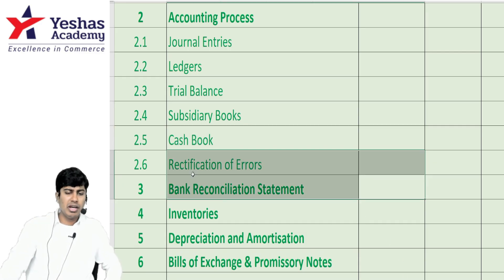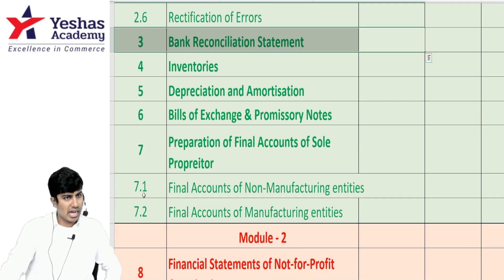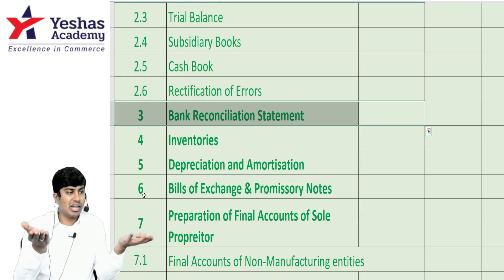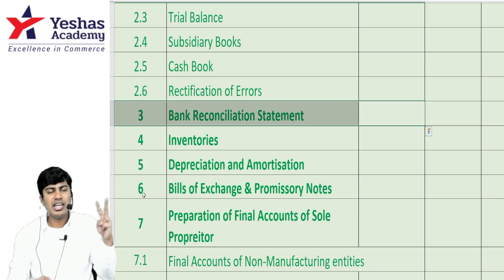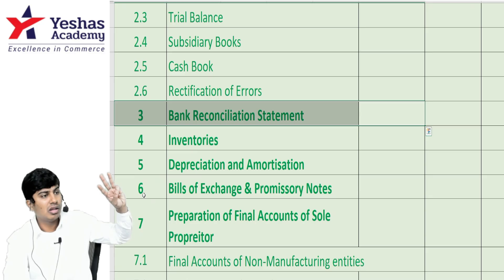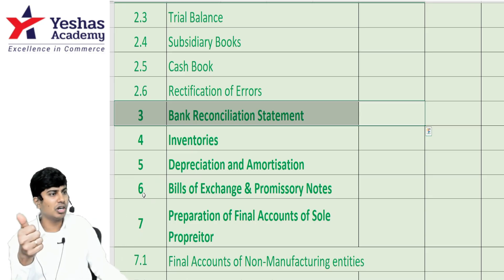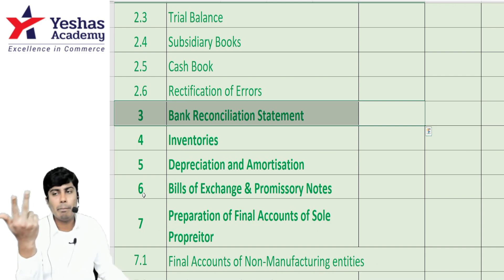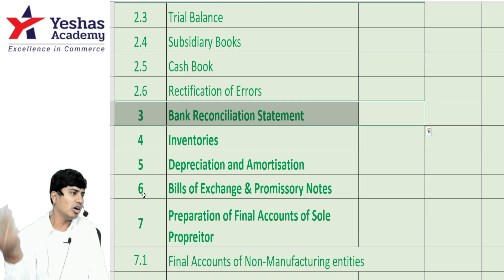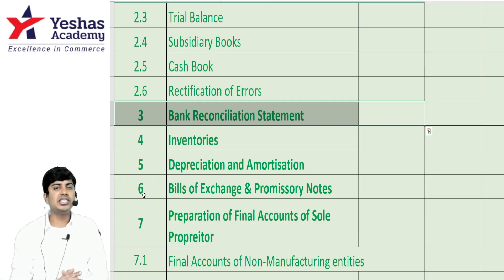For bank reconciliation statement, remember you will prepare an adjusted cash book only if they ask. We need to classify differences into timing and non-timing. Timing differences are only two: cheques issued but not cleared, and cheques deposited but not cleared. Everything else — direct deposit not recorded, overcasted cash book, bank charges not recorded in cash book, bank interest not recorded in passbook — are non-timing differences, meaning errors. Errors have to be rectified in the cash book, which is why we call it the amended or adjusted cash book.